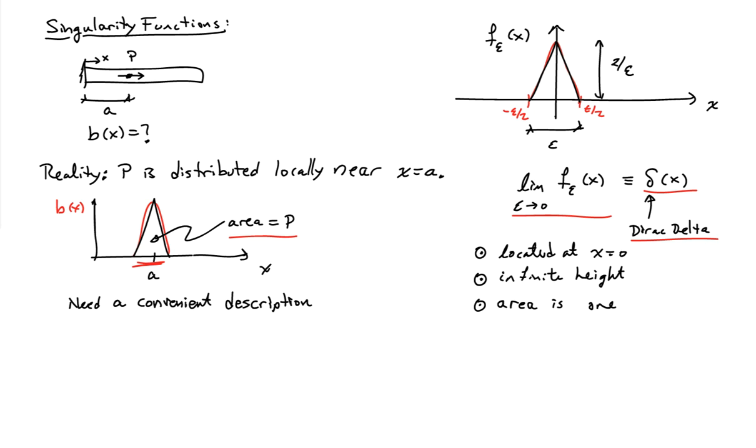So you can integrate it. Even though it's infinite, you can integrate it, and you get a nice finite value. And that's exactly what we need. So, for instance, for this problem up over here that I started with, I could use b of x is equal to p times delta of x. And I shift it over to a because I want it to be supported at x equals a. And I scale it by p so that the area is equal to p. So this is one way of representing point forces. And the Dirac delta is known as a singularity function sometimes.